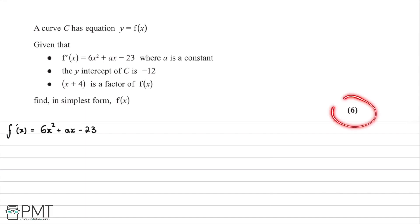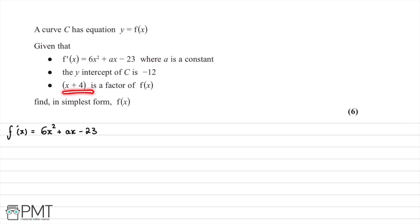In this question for six marks, we're told that a curve C has the equation y = f(x). We're given that the derivative f'(x) is equal to 6x² + ax - 23, where a is a constant. We're told the y-intercept of C has value negative 12, and that (x + 4) is a factor of f(x).